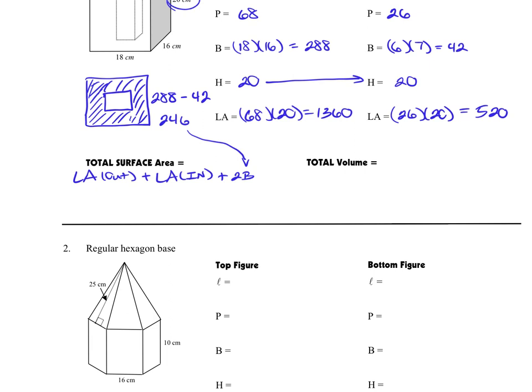So if we want to add all this up, we take the lateral area of the outside, we already calculated it, 1360. The lateral area of the inside, 520. And then we're going to add into that two of that base that we've already calculated as 246. Adding all that up, you will get 2,372 centimeters squared.